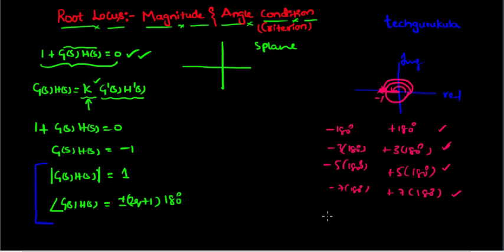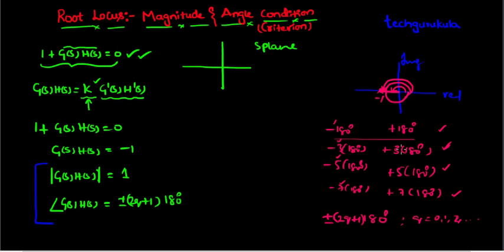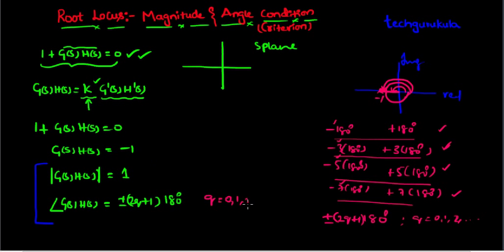Measuring in the clockwise (negative) direction gives minus 180, minus 3 times 180, minus 5 times 180, minus 7 times 180, and so on. We can write all of these as plus or minus (2q+1) times 180 degrees, since all coefficients are odd numbers. Here q takes values 0, 1, 2, etc. For q=0 we get ±180°, for q=1 we get ±3×180°, for q=2 we get ±5×180°, and so forth.